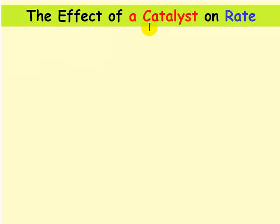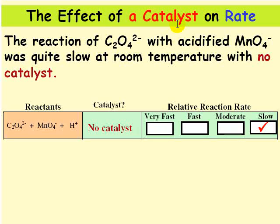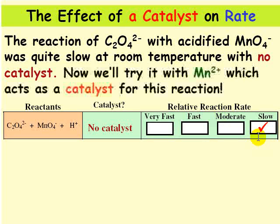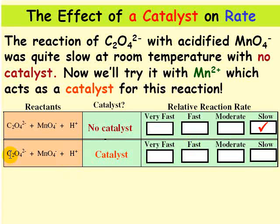Now we're going to look at the effect of a catalyst on the reaction rate. As you recall, the reaction of C2O4^2- with acidified permanganate was really slow at room temperature when we didn't have a catalyst. Now we're going to add a catalyst. Mn2+ works as a catalyst for this reaction. So we're going to do the same reaction this time with the catalyst and see what happens.